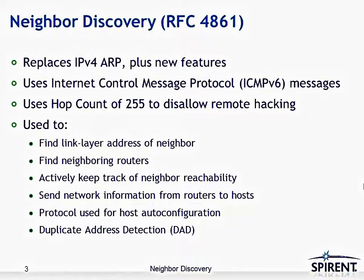Neighbor Discovery messages set the hop count to 255, which is the maximum allowable value — all 8 bits set to 1. This disallows remote hacking because if any packet came from a subnet other than the one it's received on, it's not considered a valid Neighbor Discovery packet. In other words, Neighbor Discovery should only be performed between two nodes that are on the same subnet.